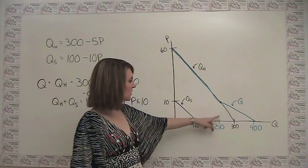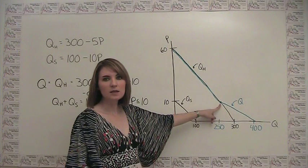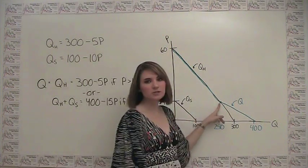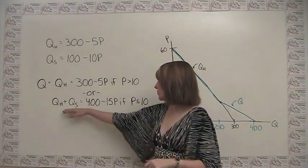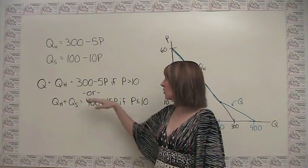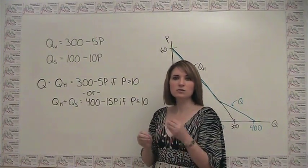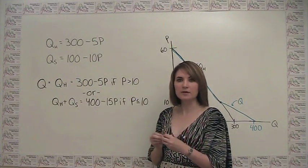You can do this by just plotting the point and saying, well, at a price of exactly 10, what happens? And it doesn't matter which equation you plug this into, whether it be the total 400 minus 15p, or the original demand for happy people by themselves, because the two different parts of the curve come together at that point.